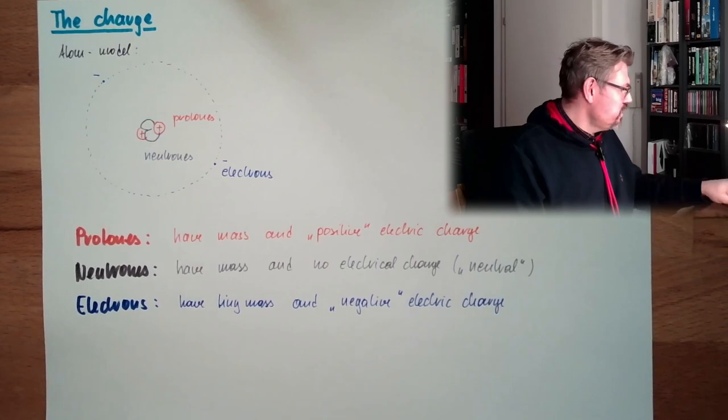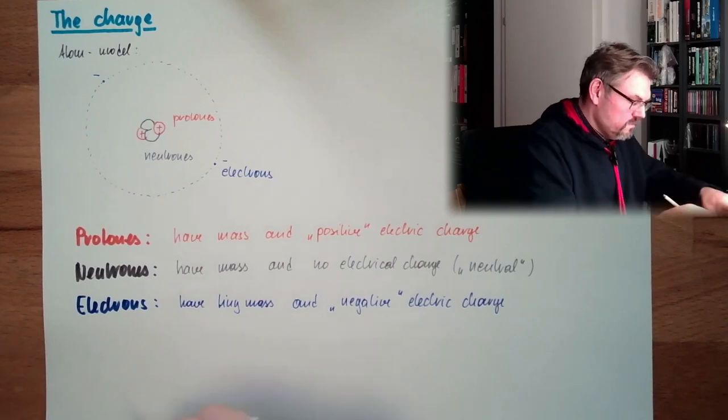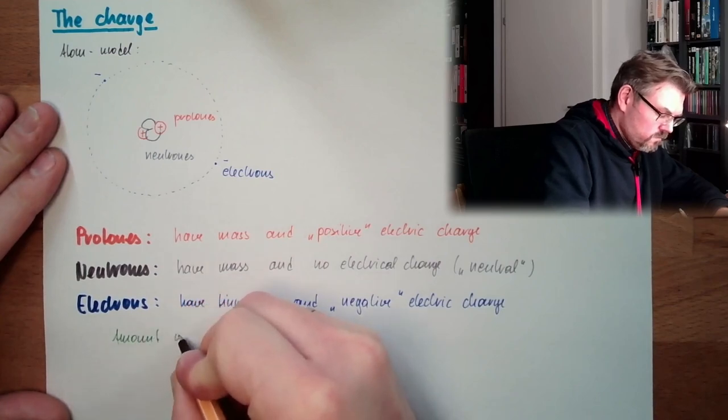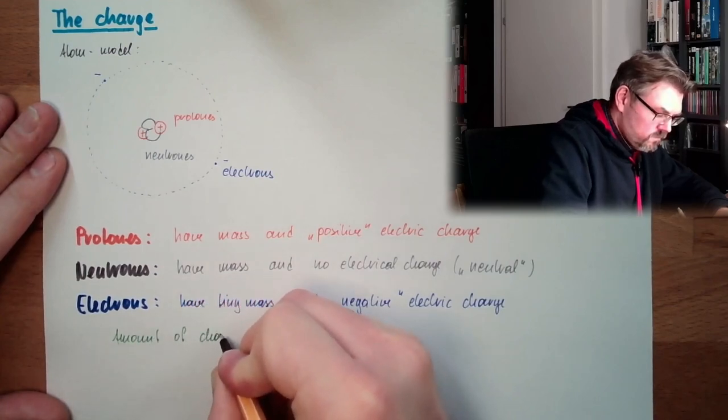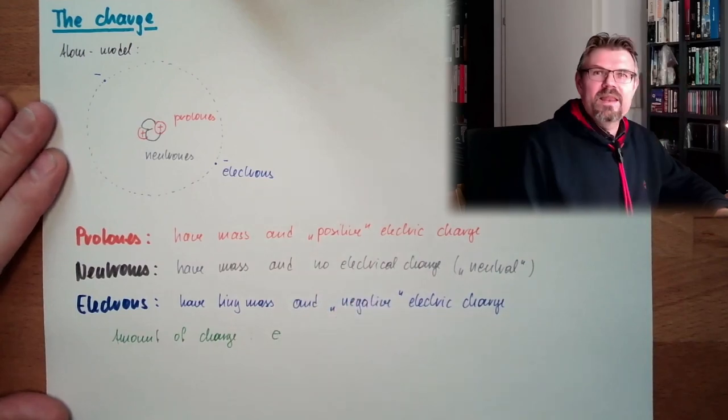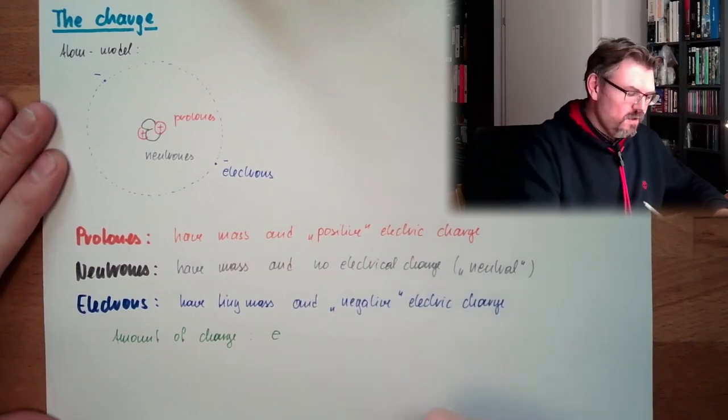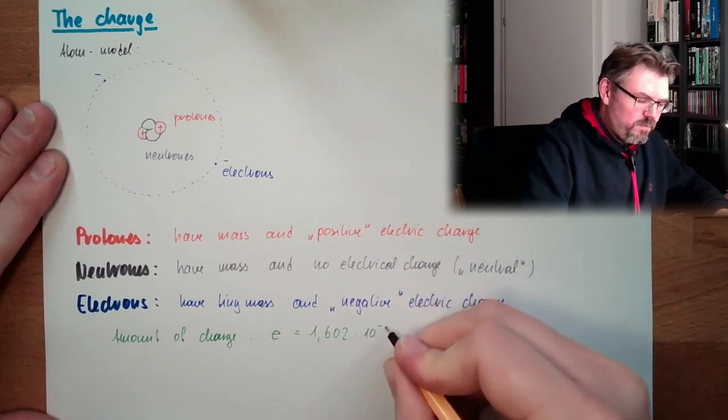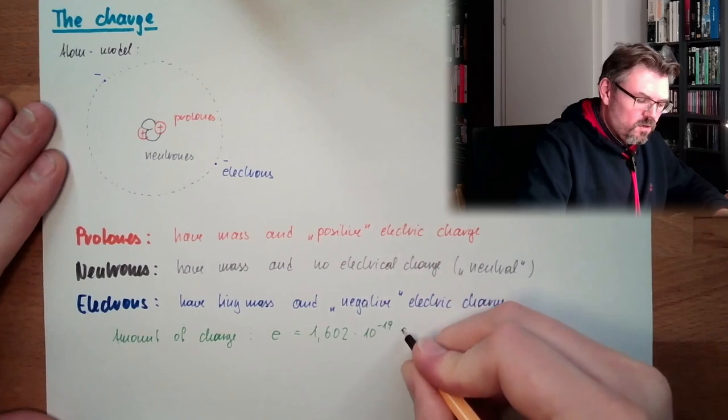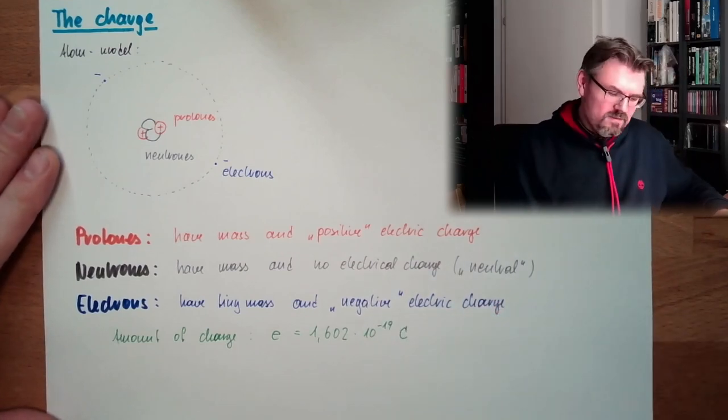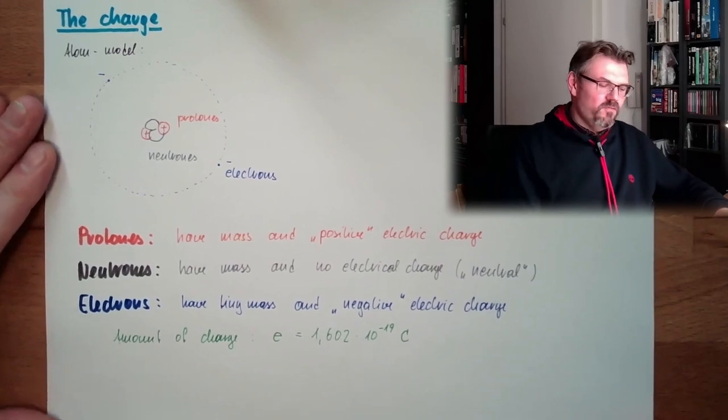The amount of charge is always called E, elementary charge. And this is 1.602 times 10 raised by the power of minus 19 Coulomb. Coulomb is the unit for charge.